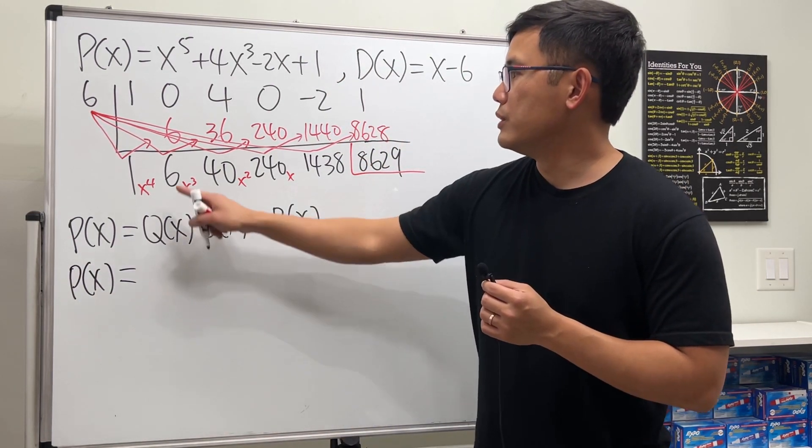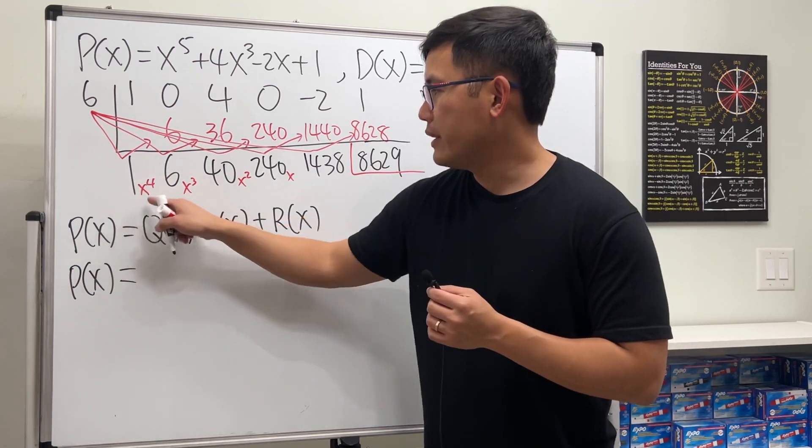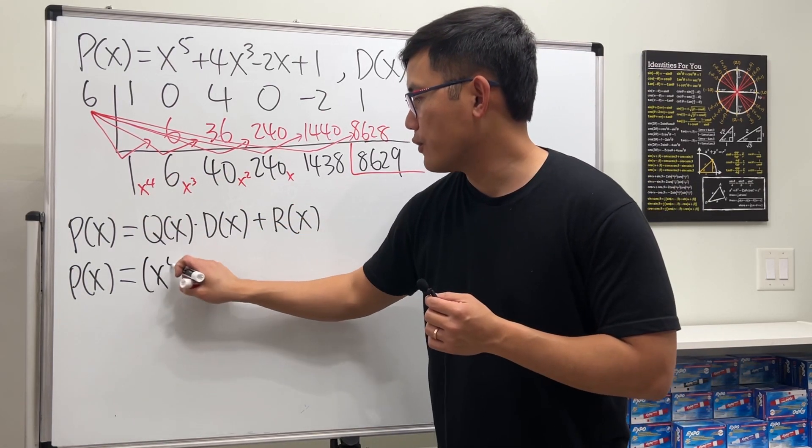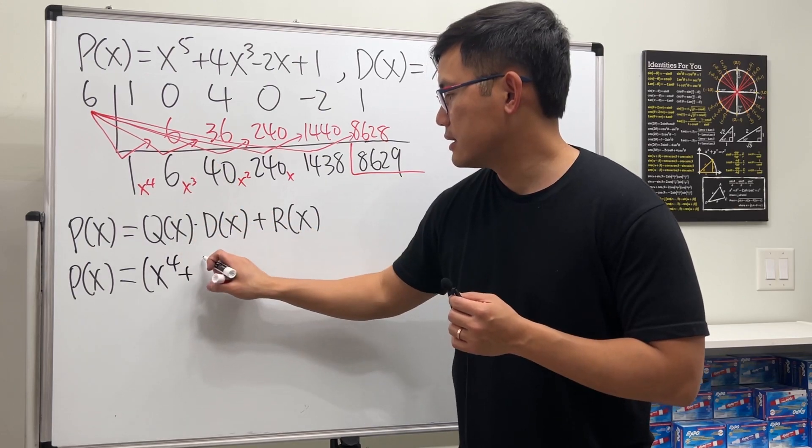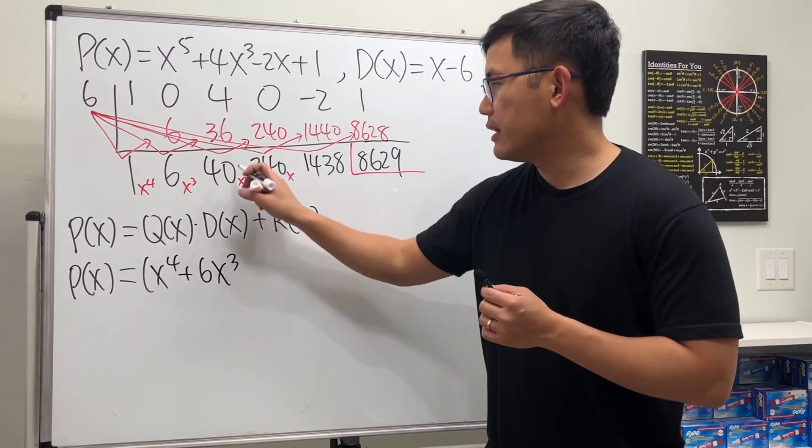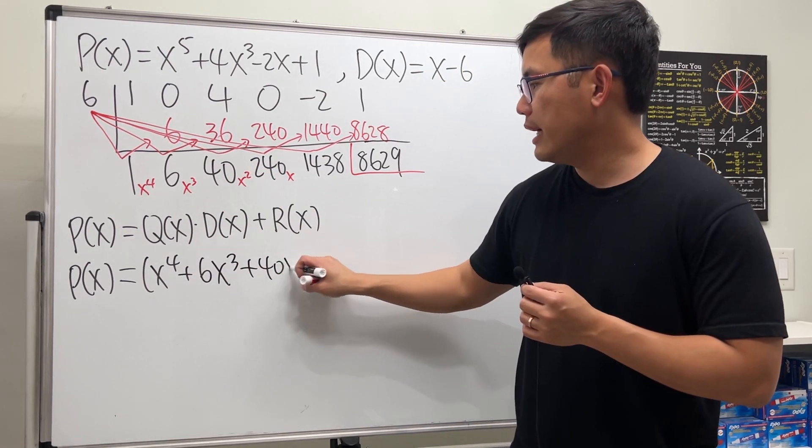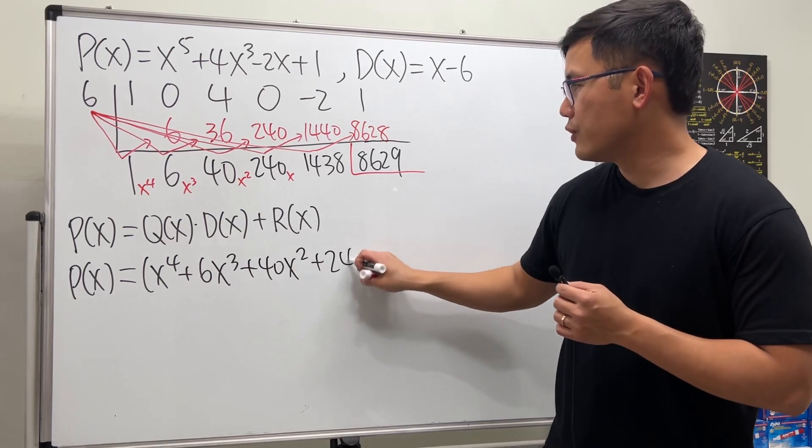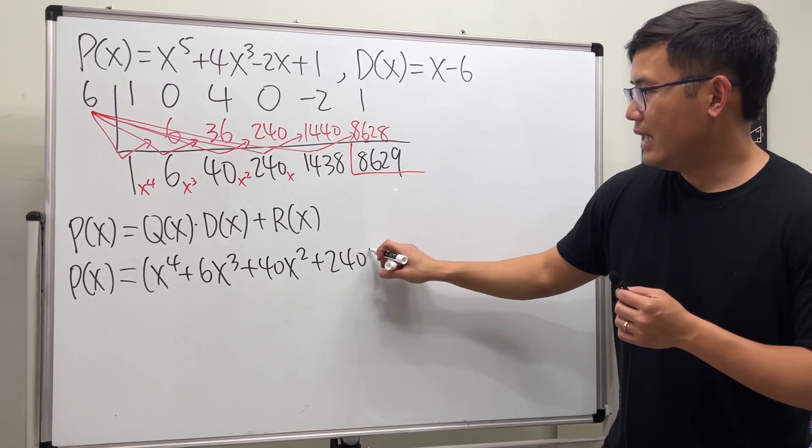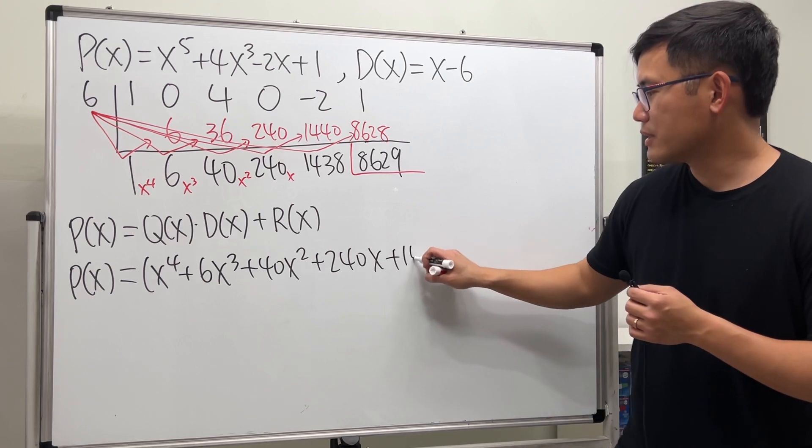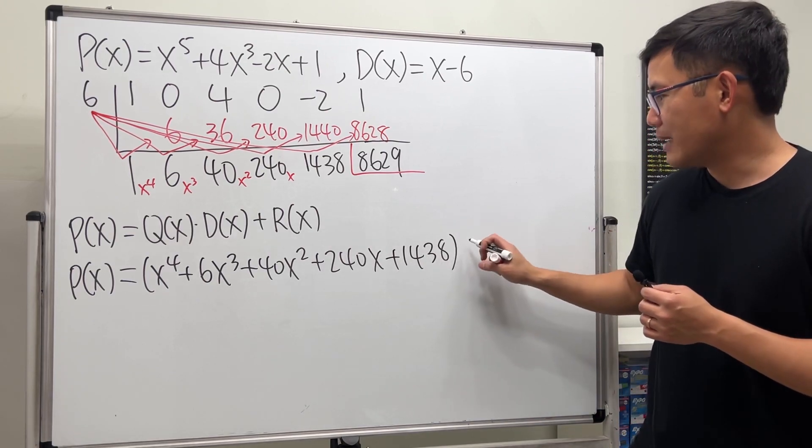Which is that: 1x to the fourth power, so x to the fourth plus 6x to the third, and then plus 40x squared, and then plus 240x, and then plus 1438, times D(x), which is that, which is x minus 6.